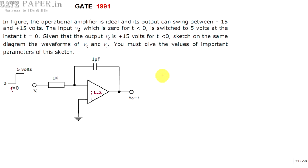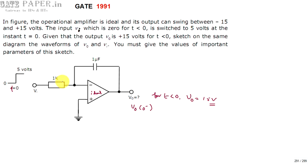We have to draw the input and output waveforms correspondingly, and given that V0(0⁻), that is for t less than 0, V0 is plus 15 volts. We are going to draw Vi and V0. By looking at this circuit, we can say directly it is going to act as an integrator. We can also get the relationship between V0 and V input, which gives the integration.